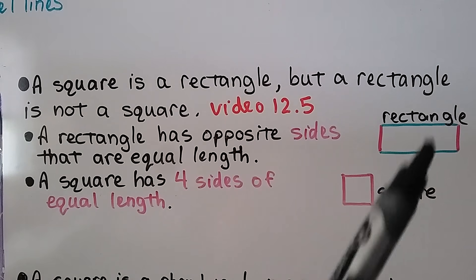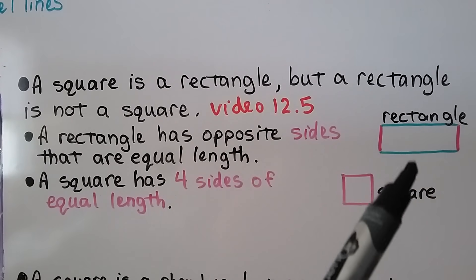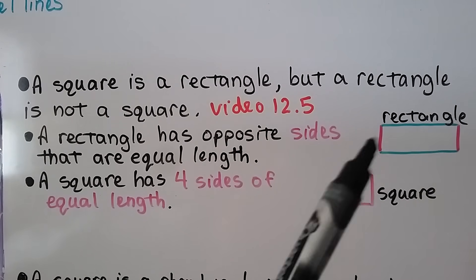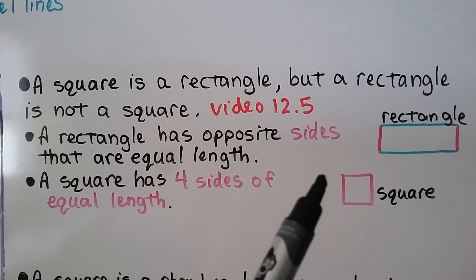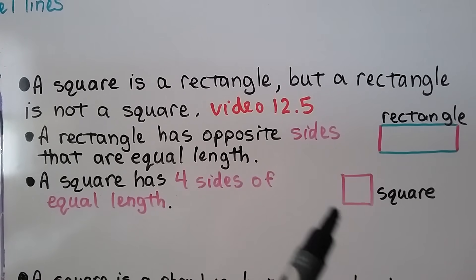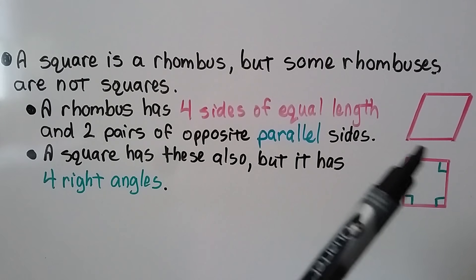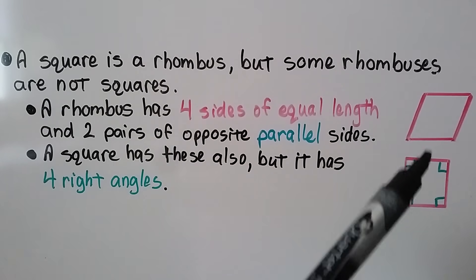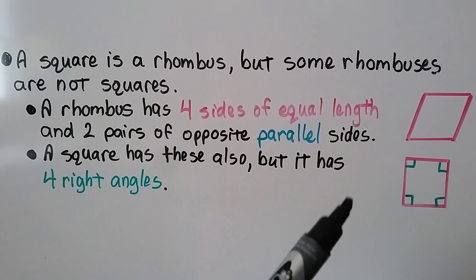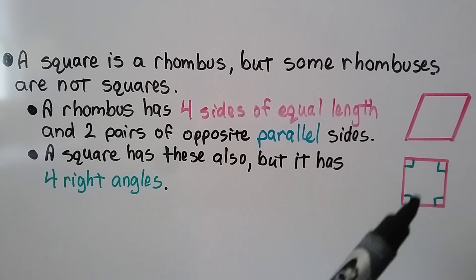A rectangle has opposite sides of equal length — these two are the same length, and these two are the same length — but a square has four sides of equal length. A square is a rectangle, but a rectangle is not a square. And a square is a rhombus, but some rhombuses are not squares. A rhombus has four sides of equal length and two pairs of opposite parallel sides; a square has these too, plus four right angles.